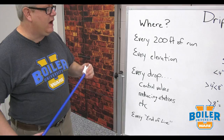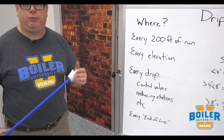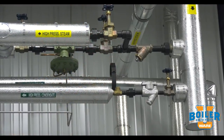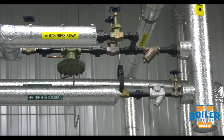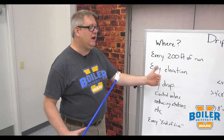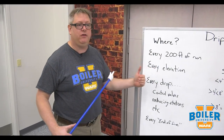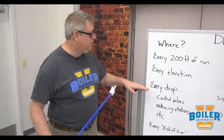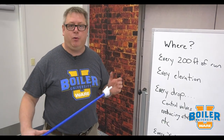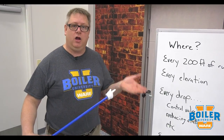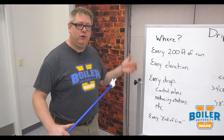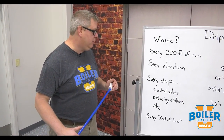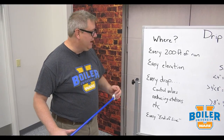At every drop — so if we've got control valves, pressure reducing stations, kettles, etc. — anywhere we're going to use steam, where we take off, we want to have a drip leg. Because presumably if we've got a control valve, at some point it's going to be closed, and when it's closed that upstream piping will flood with condensate, so the drip leg and trap keep that clear.